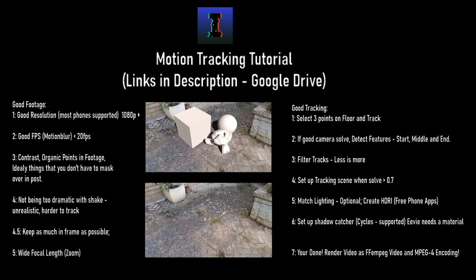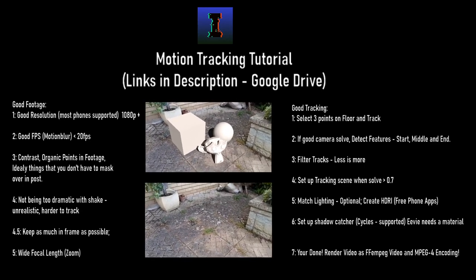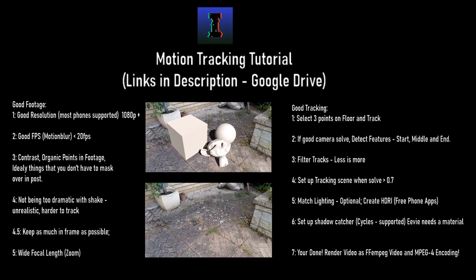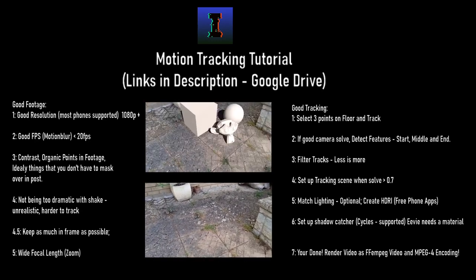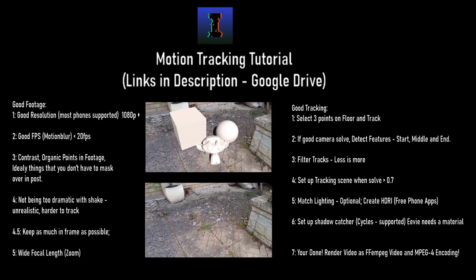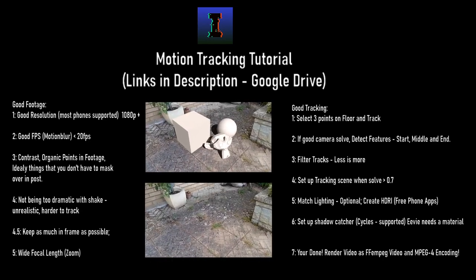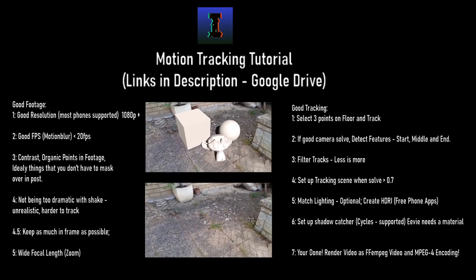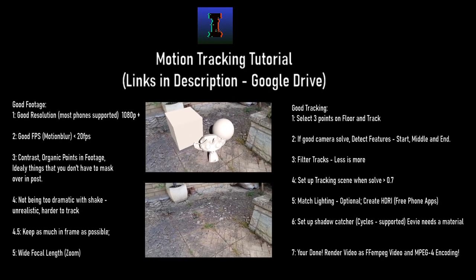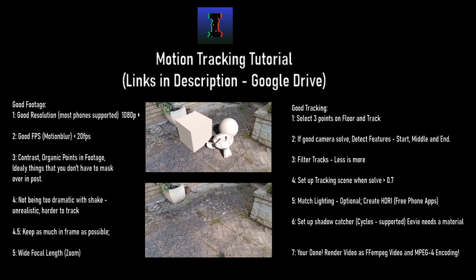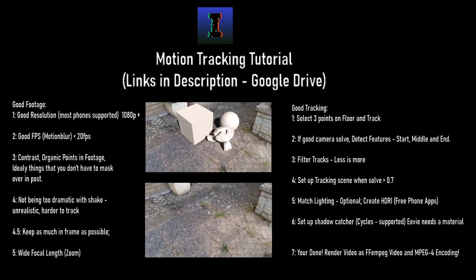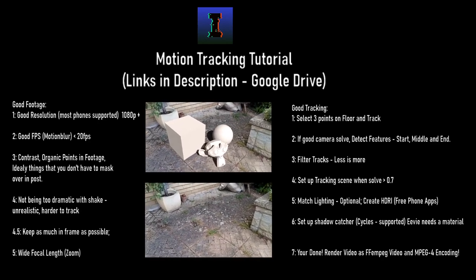If you don't know what motion tracking is, it's basically where you get a camera and you film something in real life. Then you track the points of your footage in Blender, and you let the computer solve the camera motion so it can get a near-to-absolutely correct interpretation of what the camera was doing in real life. Then you can add perspective and 3D objects into your scene.